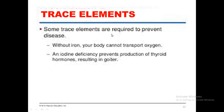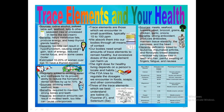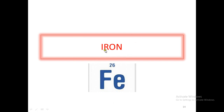Trace elements, even though required in very small amounts in the diet, are extremely important for the human body. Without iron, the body cannot transport oxygen. If there is a deficiency of iodine, it leads to that swelling in front of the neck called goiter. Fluorine is another important trace element — without it, a lot of caries develop, so in some countries it is added to toothpaste. Today's discussion centers around iron, because we are going to discuss iron deficiency anemia.